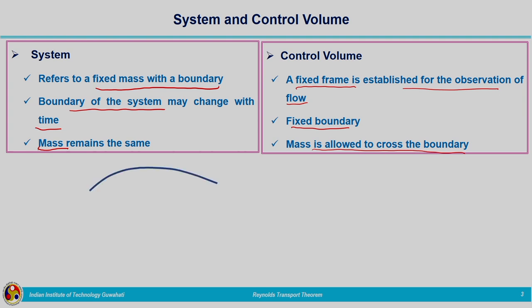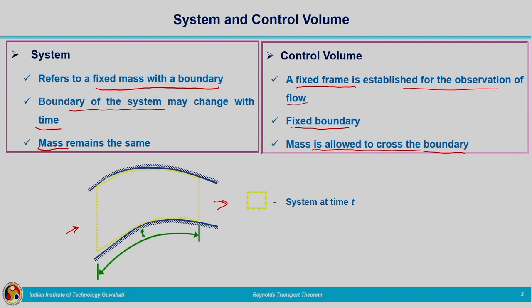We can consider an example to understand system and control volume. Let us take a domain in which fluid flow is taking place from left to right. We are considering the system at time t, represented by a yellow dotted line. The fluid within this flow field contained within this yellow dotted line is what is considered as the system at time t.